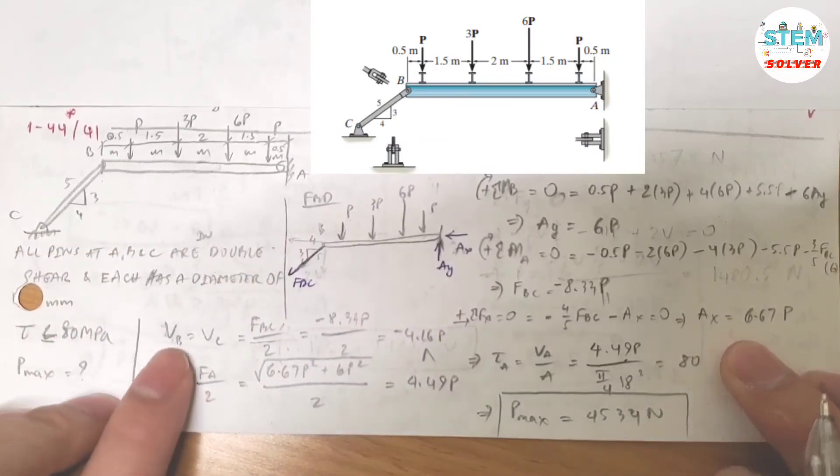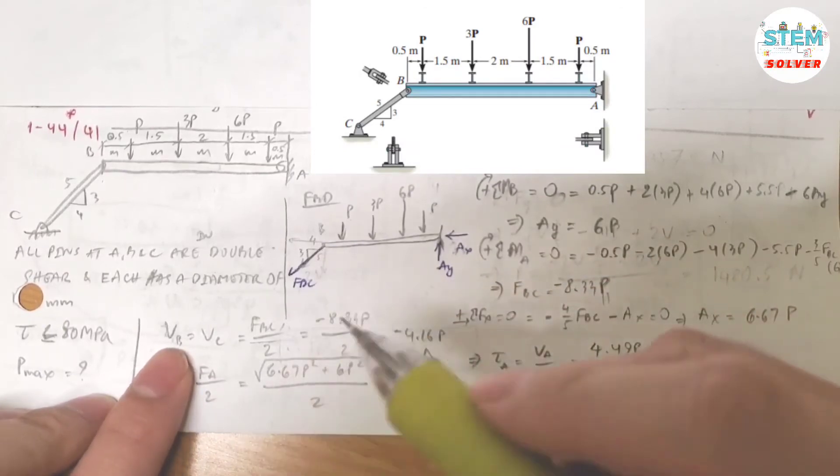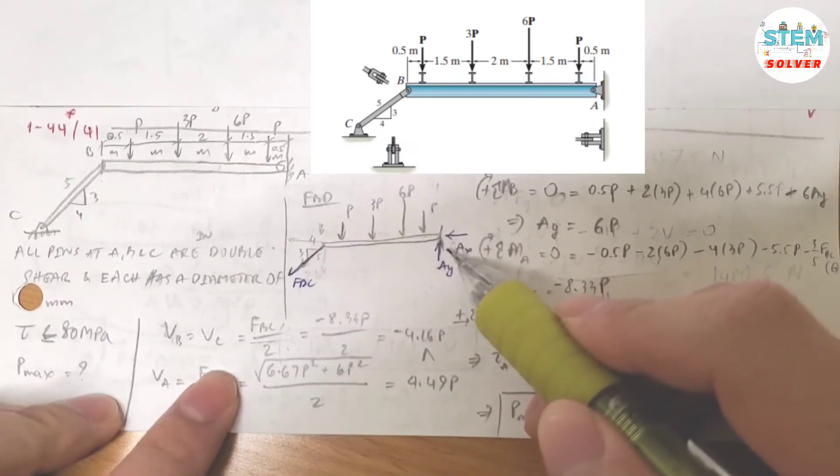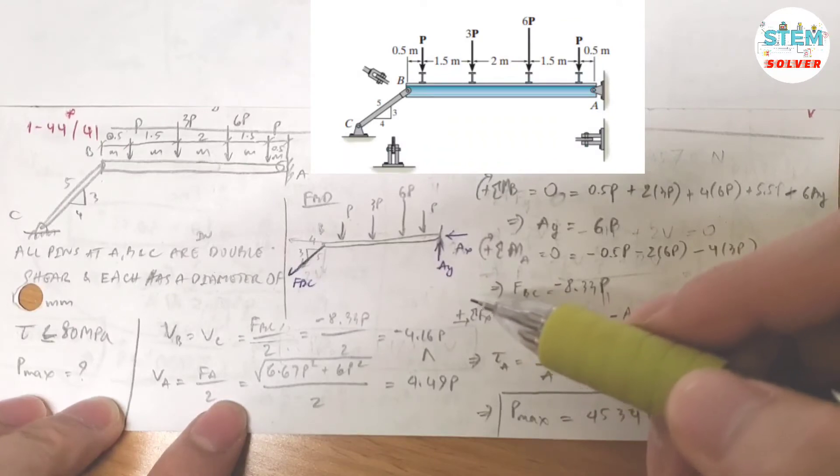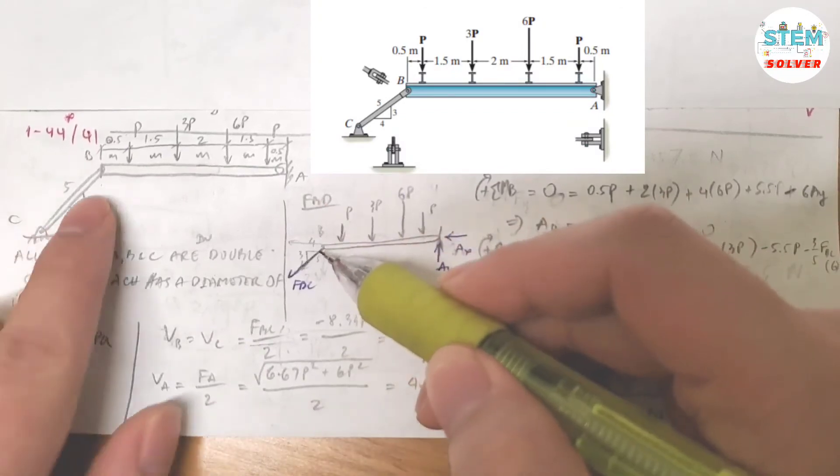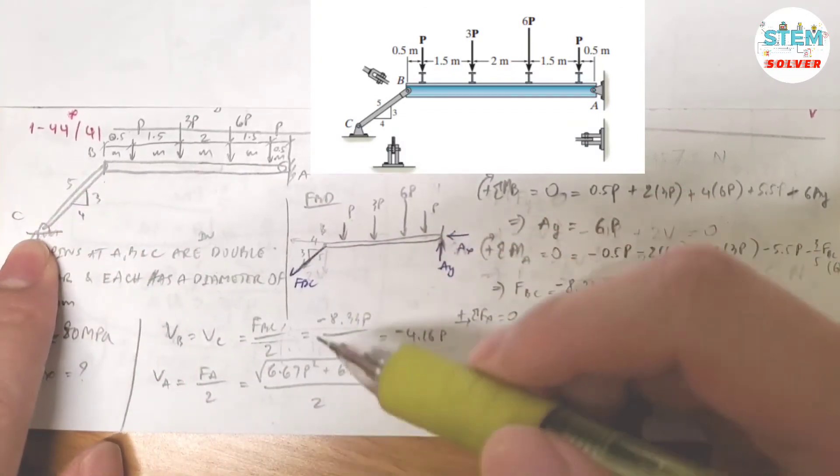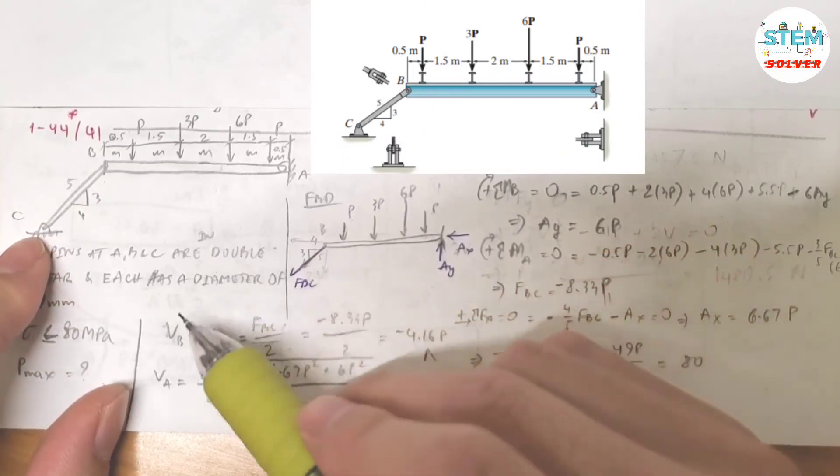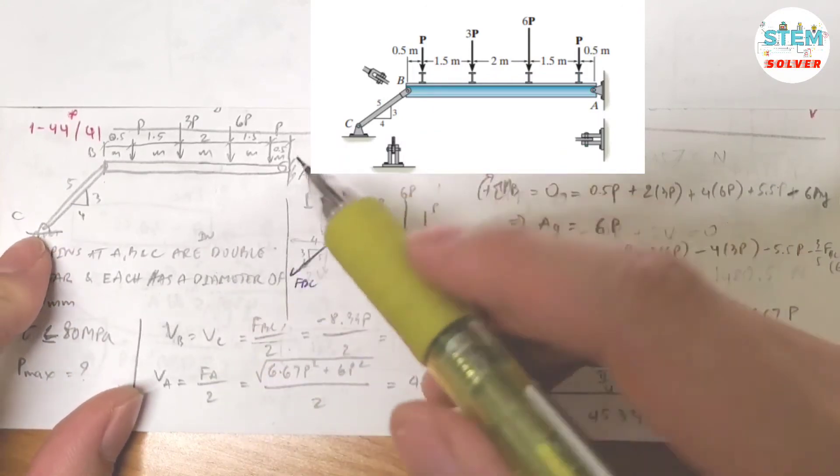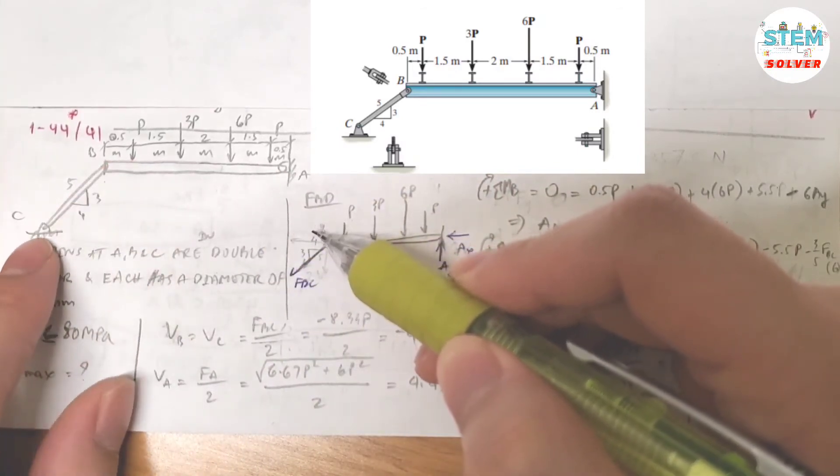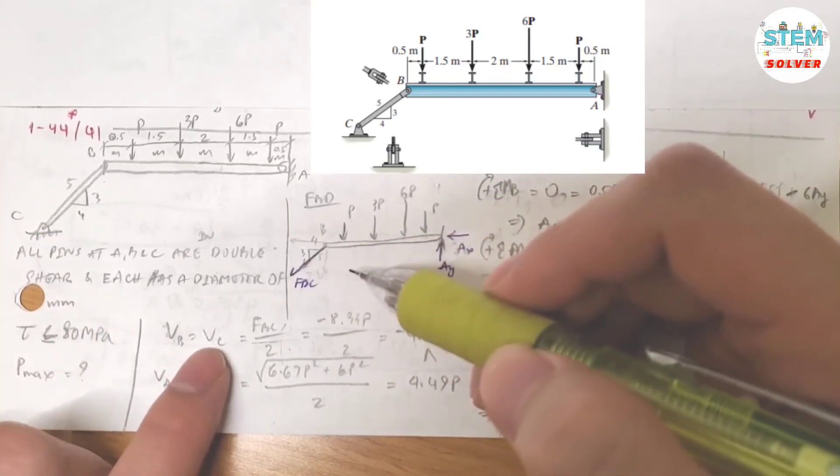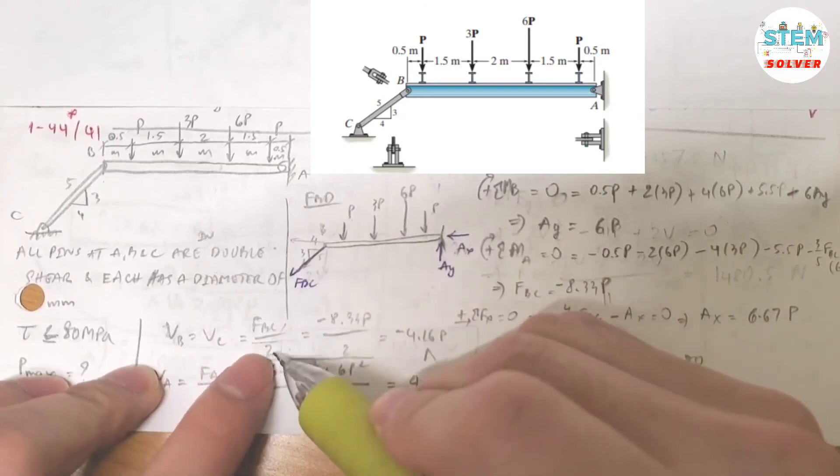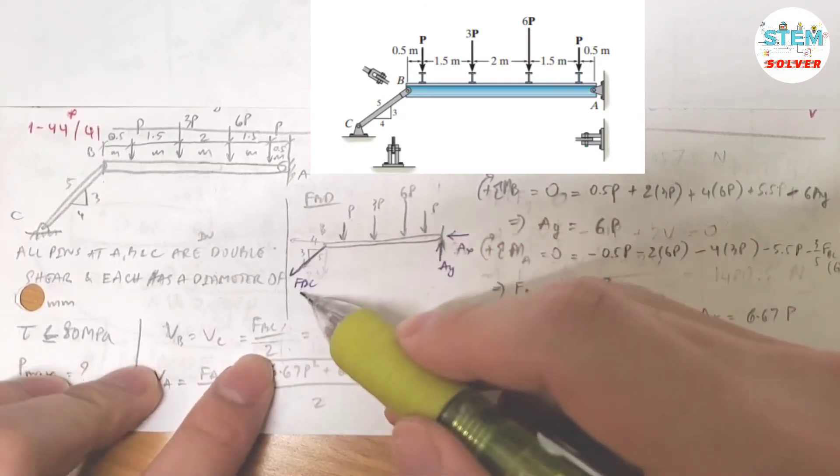Now the shear at B is the same as the shear at C. You have a pin joint right here and another pin joint right here. As mentioned in the figure, they are in double shear. This shear right here is the same as this shear right here because they share the same force. The shear force at B is the same as the shear force at C, and that equals the force BC divided by 2 because you have double shear.